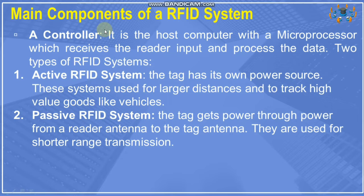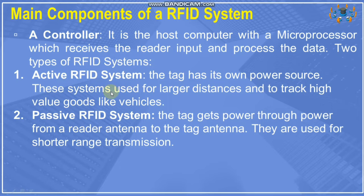The controller is a host computer with a microprocessor which receives the reader input and processes the data. There are two types of RFID systems: active and passive. An active RFID system has its own power source and is used to cover large distances and track high-value goods like vehicles. For example, at a railway station, active RFID is used to track trains — it tells the system where the train is and within how many seconds it will reach the destination.